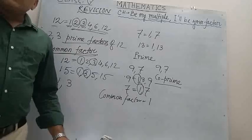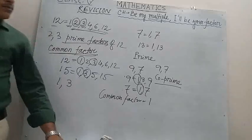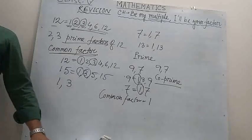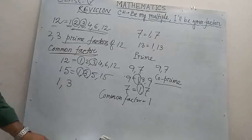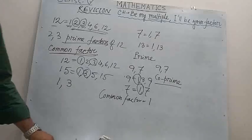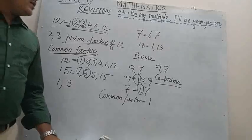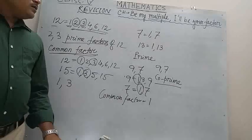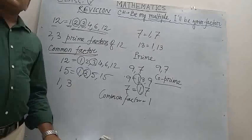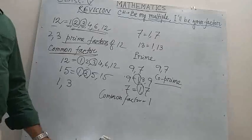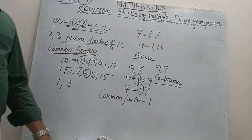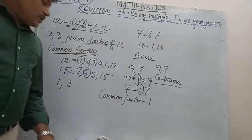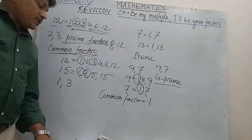So 9 and 7 are called co-prime numbers. What is a co-prime number? The numbers which do not have any common factor other than 1 are called co-prime numbers.